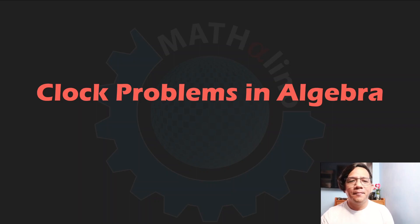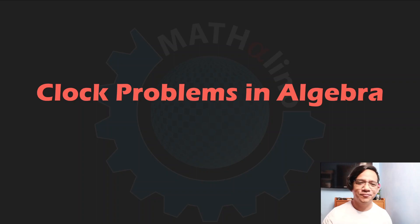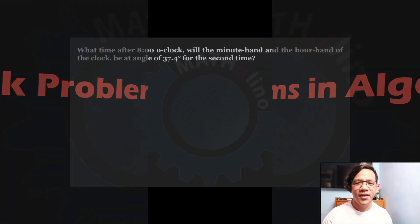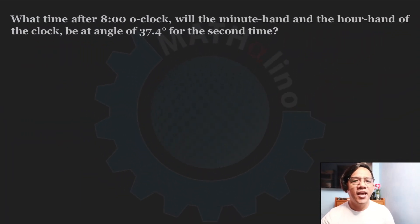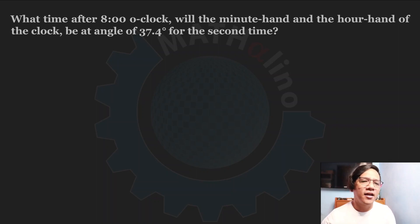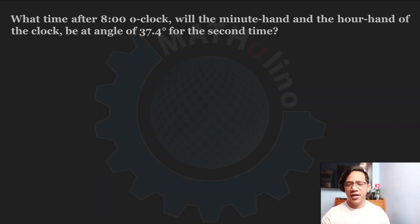Good day, everyone. In this video, we are going to discuss advanced techniques in solving clock problems in algebra. Start with the problem: what time after 8 o'clock will the minute hand and the hour hand of the clock be at an angle of 37.4 degrees for the second time?